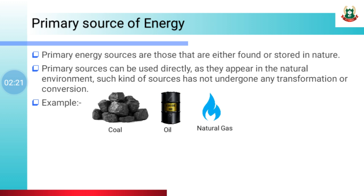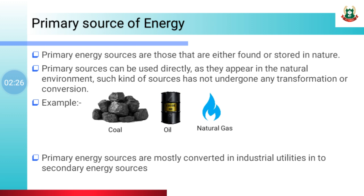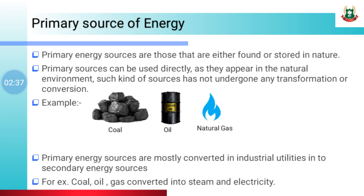However, these primary energy sources are mostly converted into secondary energy sources for industrial utilities. That is, coal, oil, and gas are converted into steam and electricity.